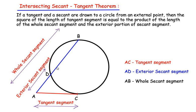A secant is a line which cuts the circle at two points. Here the secant cuts the circle at points B and D, and this secant BD is extended so it meets point A, which is exterior to the circle. This extended part is called the exterior secant segment, and the full length — secant plus the extended part — is called the whole secant segment.